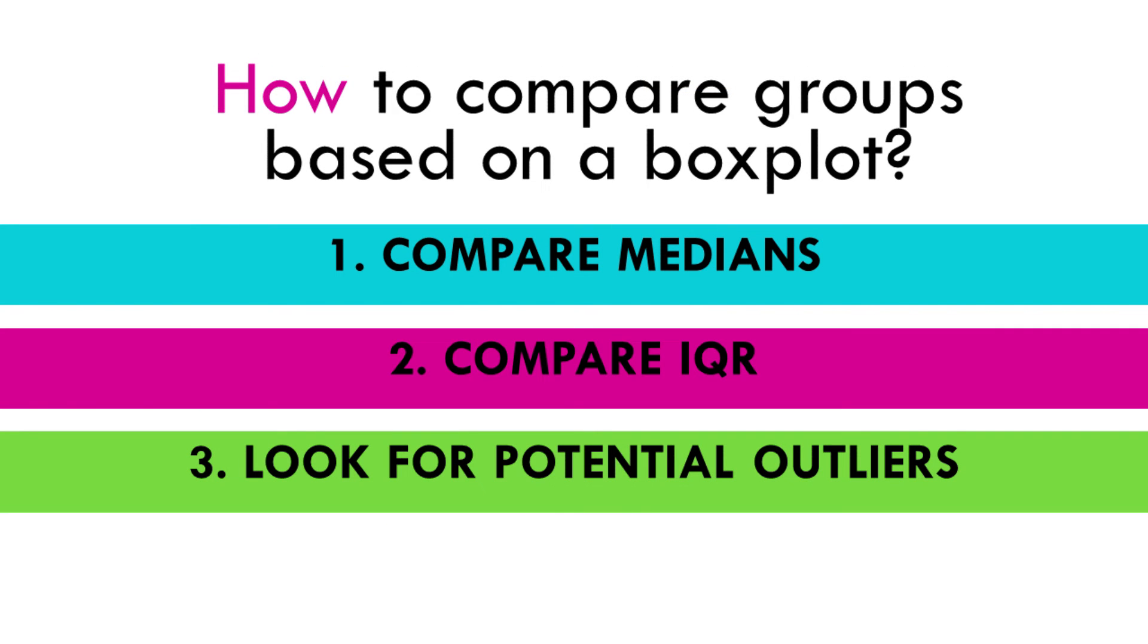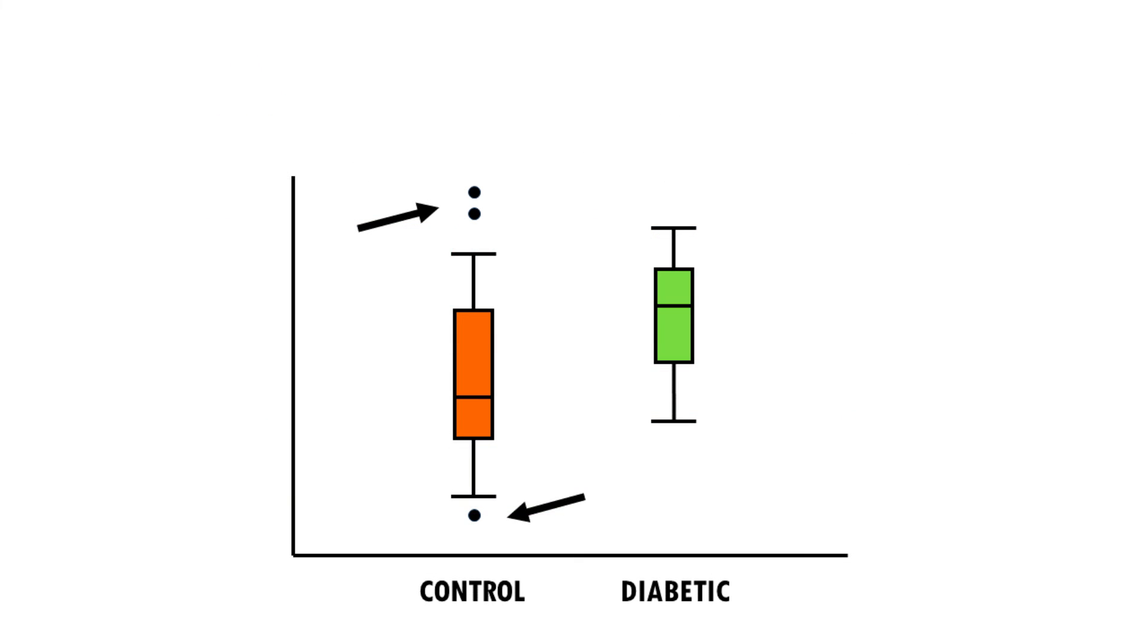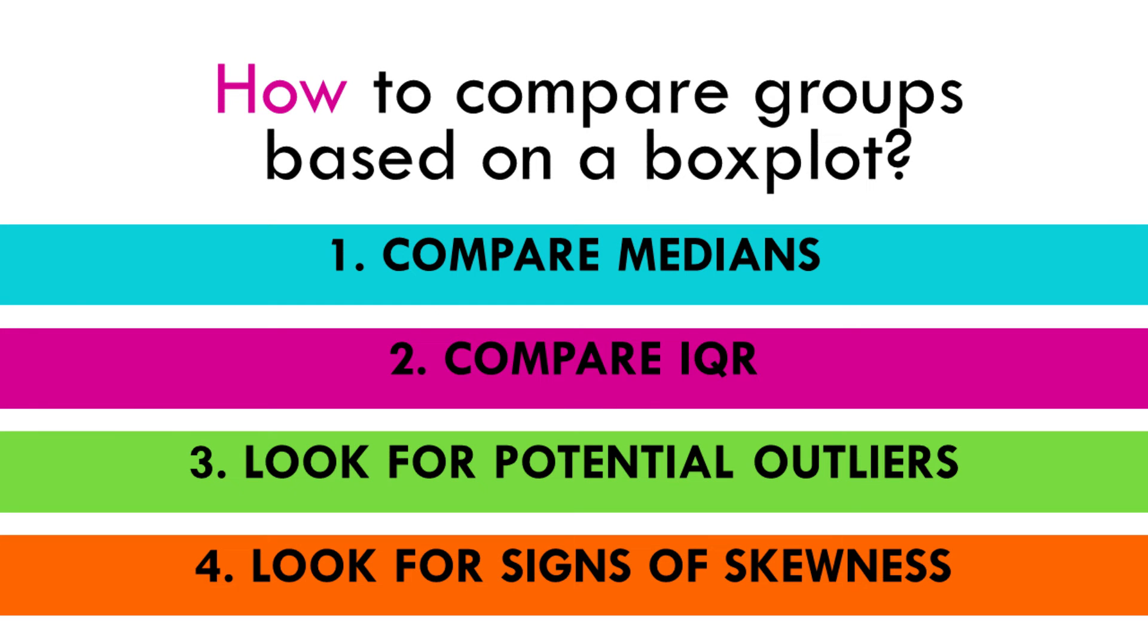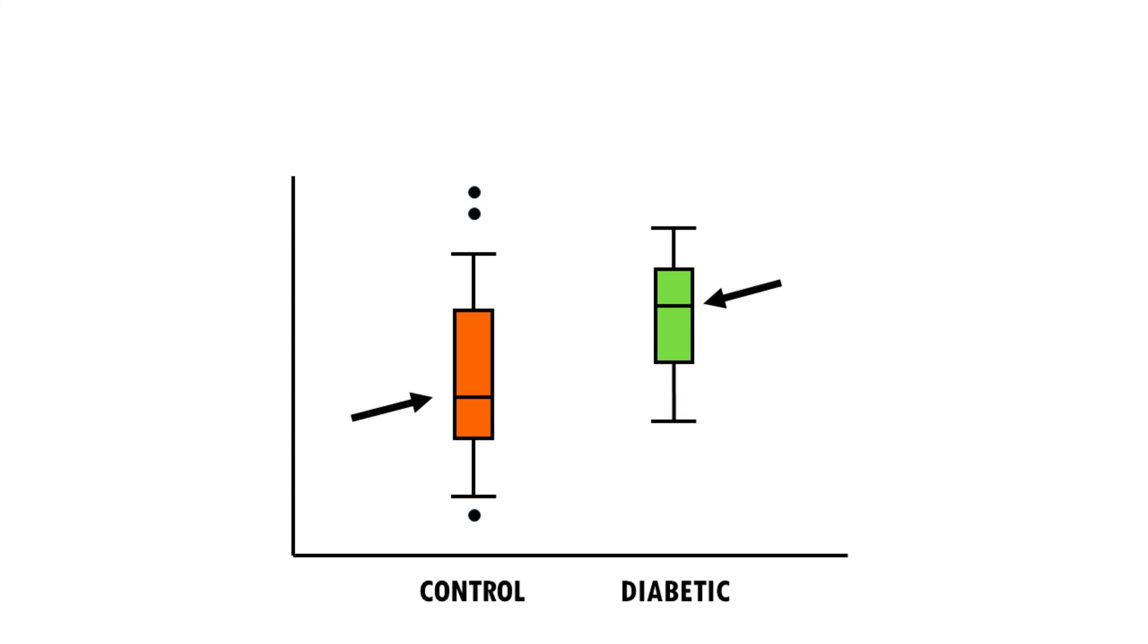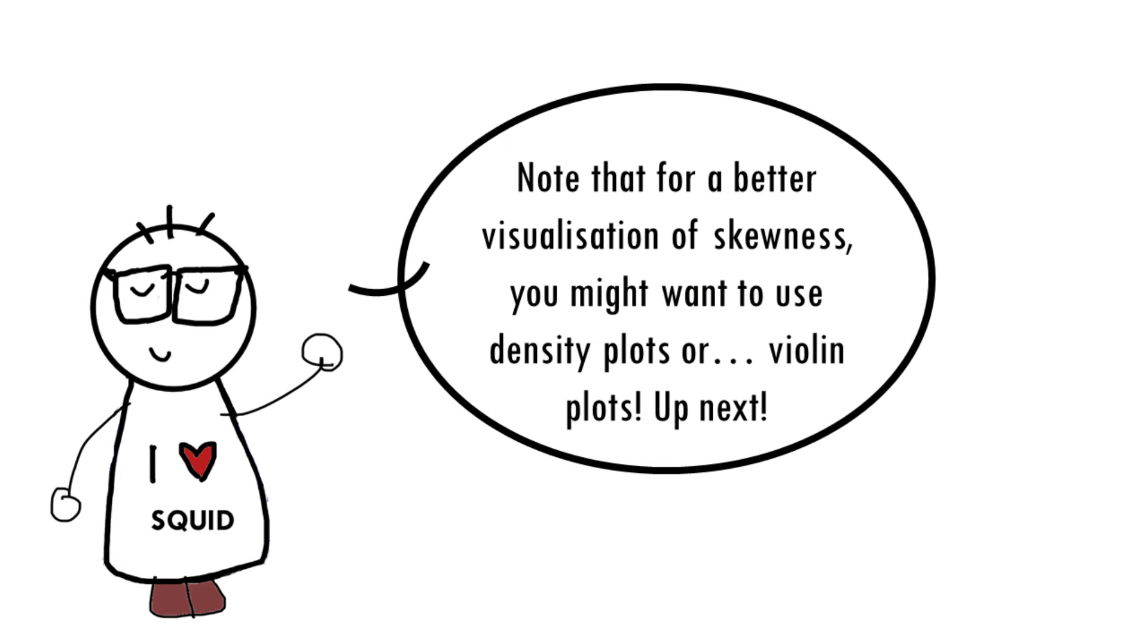We can also look for potential outliers. So when reviewing a box plot, an outlier is usually defined as data points that are located outside the whiskers of the box plot. So we can see a few outliers in the control group. Finally, we can look for signs of skewness if the data does not appear symmetric. In this case, this is not really the case. As you can see, box plots are great to compare different groups or categories.